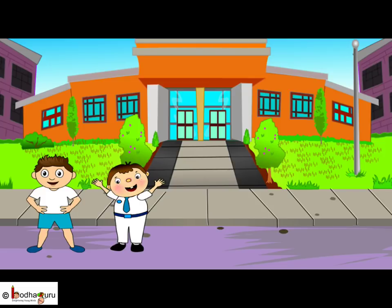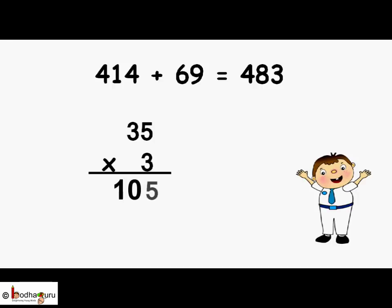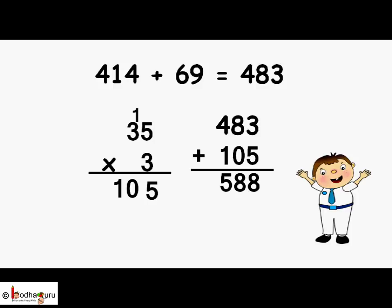First, let us calculate the amount required for bat and ball. 414 plus 69 is equal to 483 rupees. Now 3 wickets means 35 into 3. Each wicket is 35 rupees, so 3 wickets will be 35 into 3 which is equal to 105 rupees. So the total money required is equal to 483 plus 105 which is equal to 588 rupees.